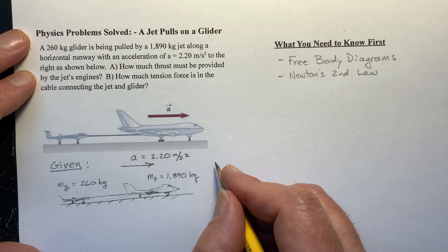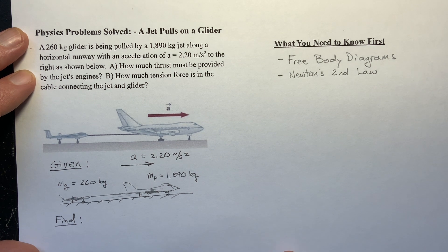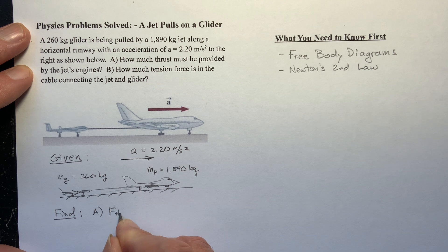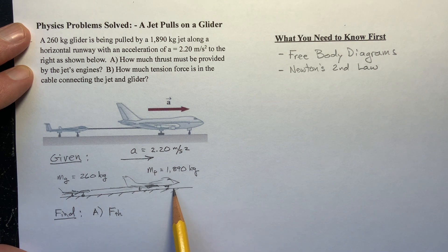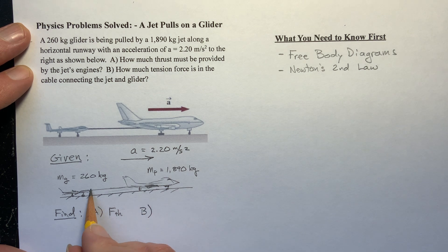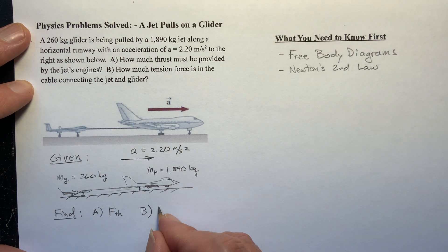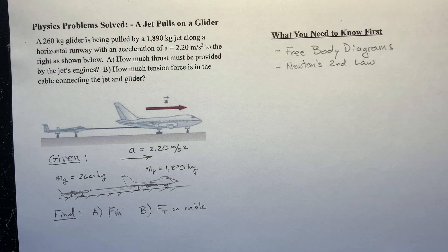What are we trying to find? I'll put that right here. What does it ask for part A? We want to know what is the force of thrust. And I'll go F sub TH for the force of thrust. How much thrust do these engines need to put out to accelerate this mass? And then for part B, we want what is the force of tension? How much tension force is in the cable? So we want the tension force on the cable.